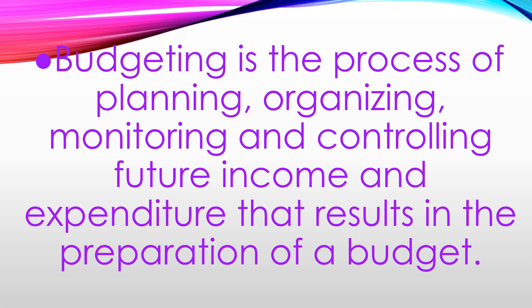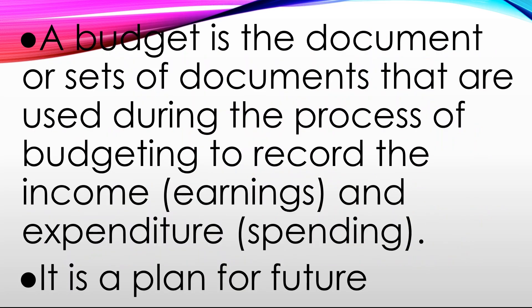All things that require money — expenses — are covered, including savings for the family, for them to achieve goals. That's what budgeting is all about. Budgeting is the process of planning, organizing, monitoring, and controlling future income and expenditure that results in the preparation of a budget. A budget is a plan for future expenses; it is a document or set of documents used during the process of budgeting to record the income and expenditure.